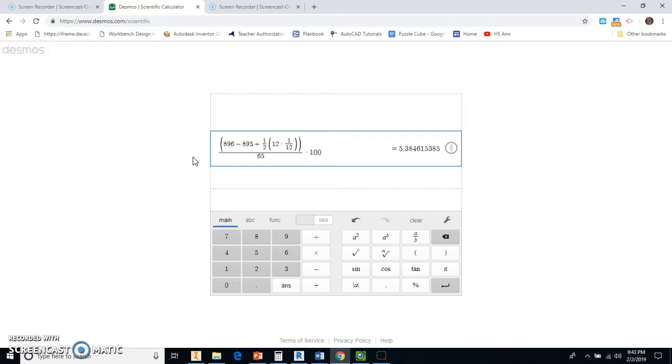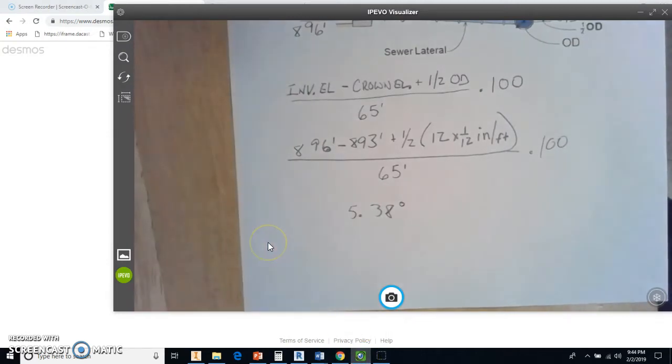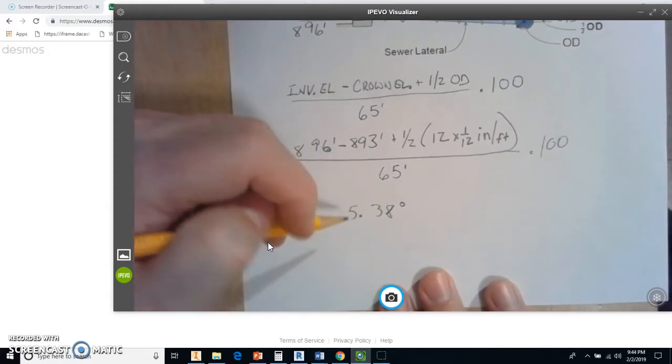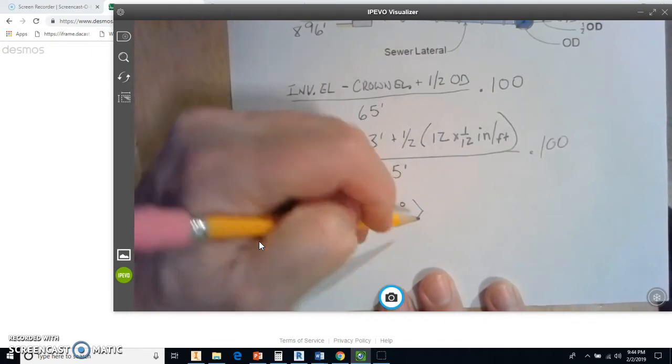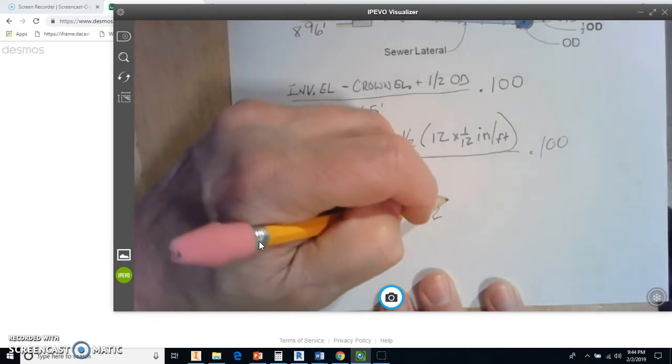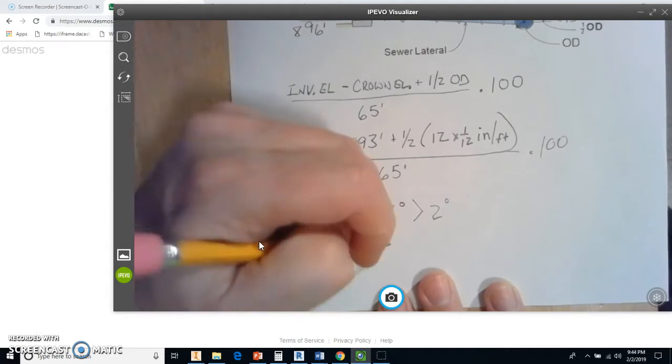So I'll bring it back to the camera. So you just write 5.38 degrees, which is greater than 2% slope, so this is verified.